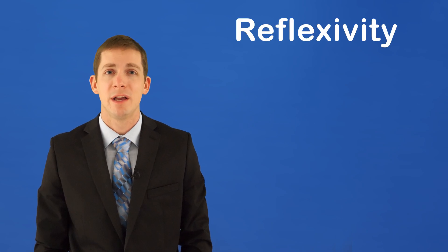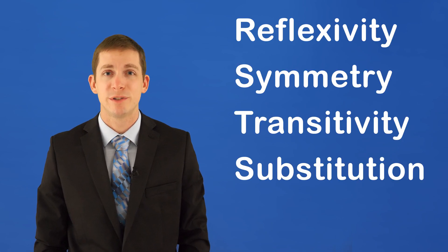Now, if we were going to do a mathematical proof to prove that two plus two equals four, we would actually be using the principles of equality. These are things like reflexivity, symmetry, transitivity, and substitution.